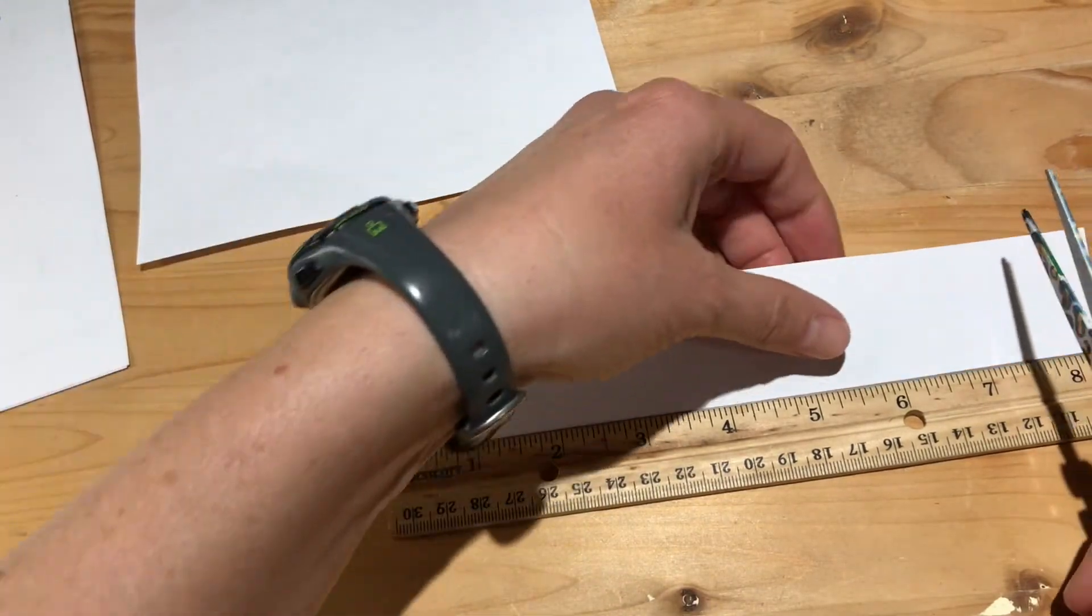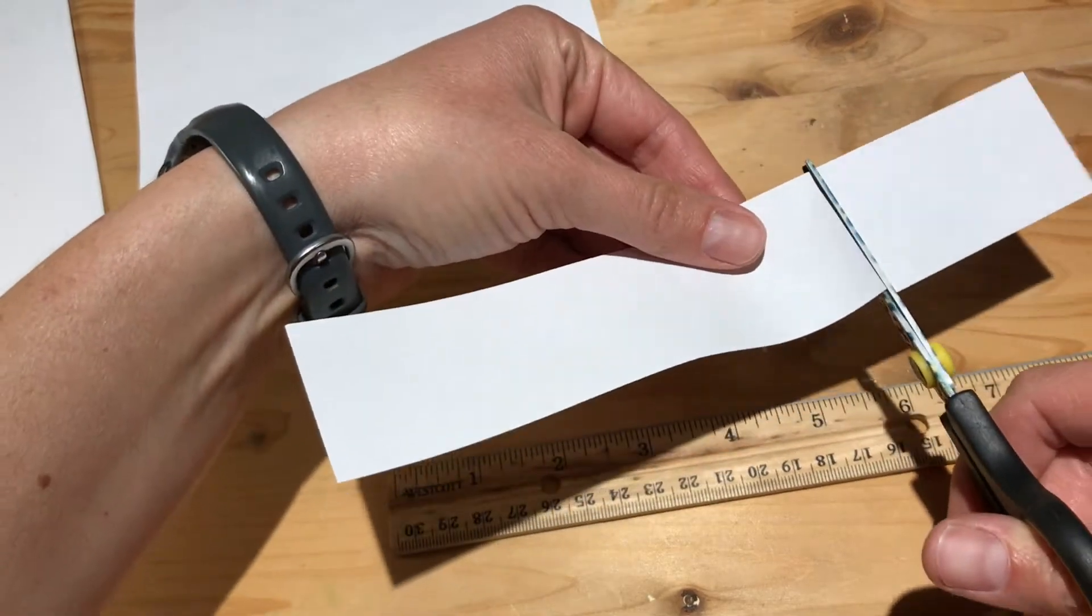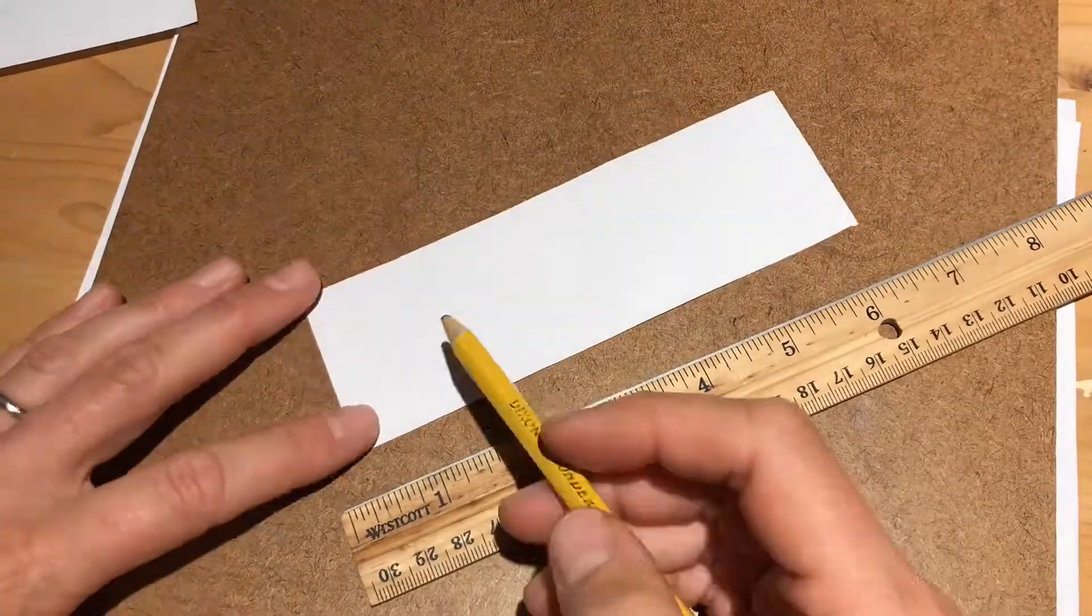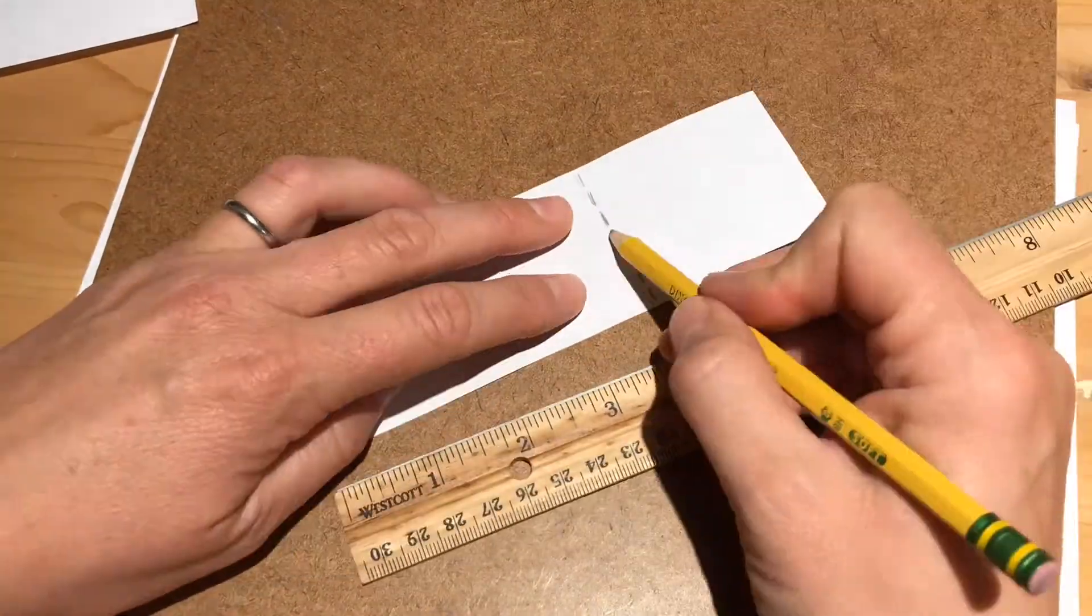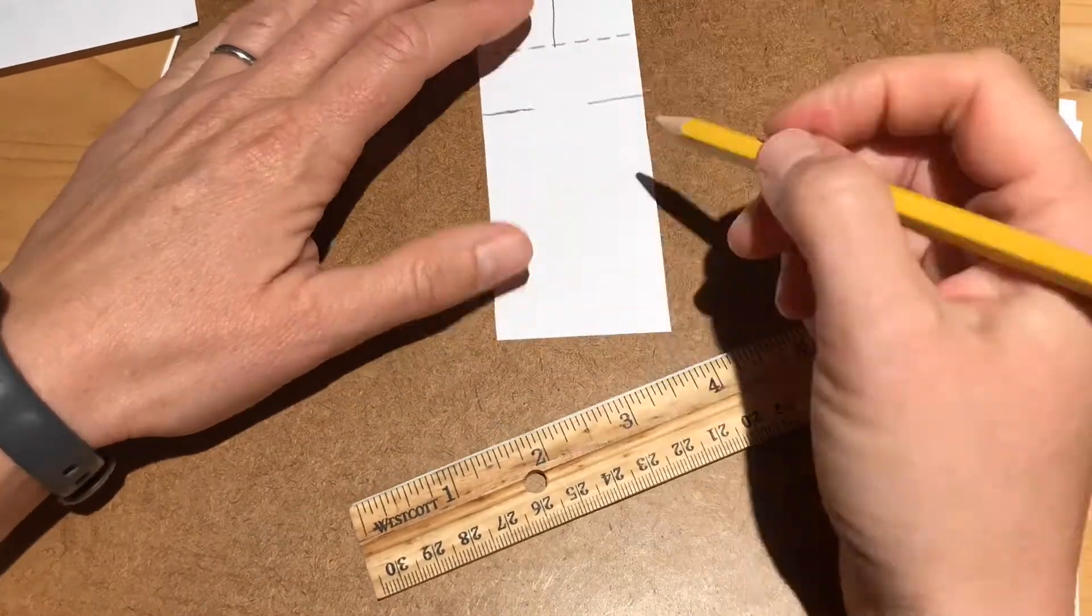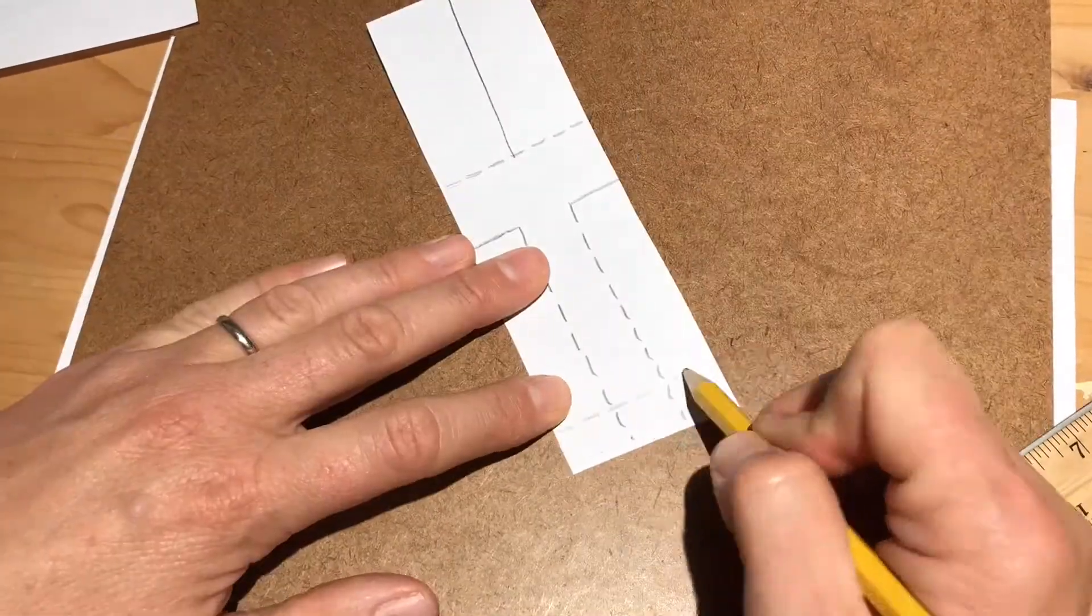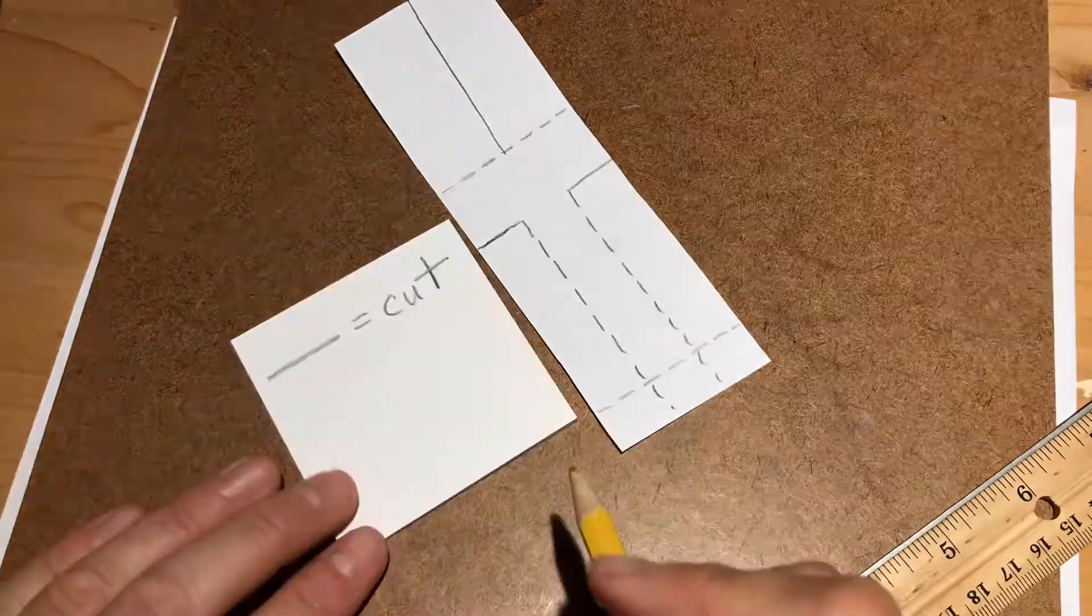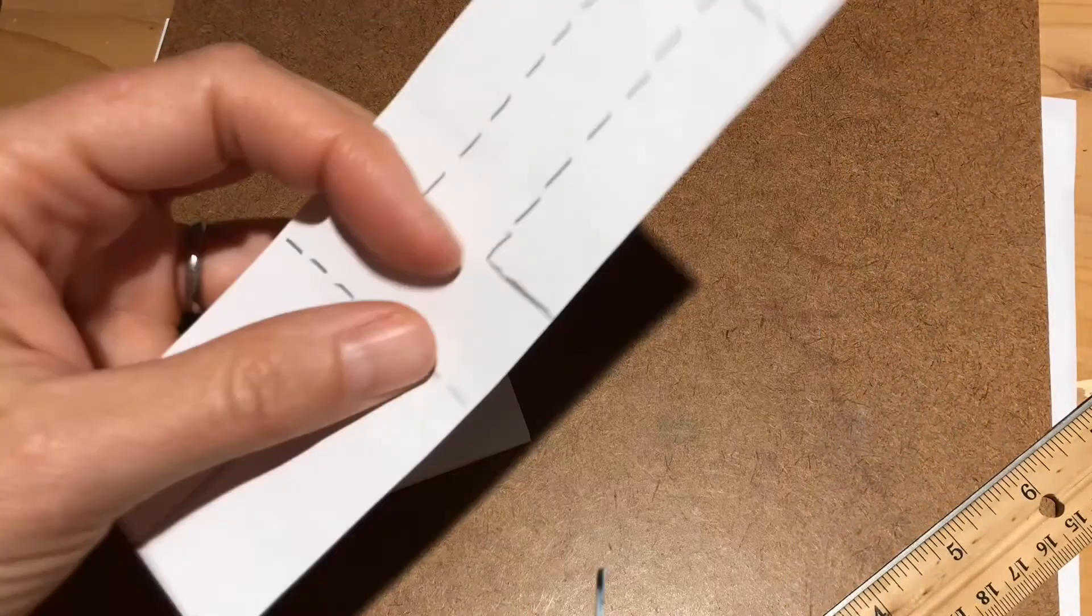So you're going to want to cut a piece of paper that's around six inches long and around one and a half or two inches wide. Now I'm drawing these lines just to show you where to cut and fold. You don't need to draw these lines when you make yours.